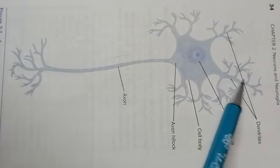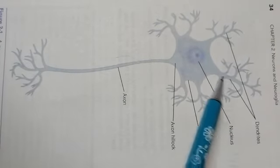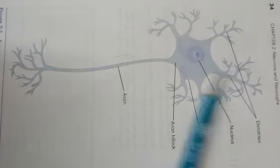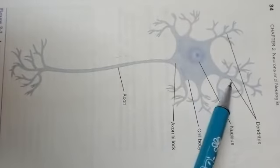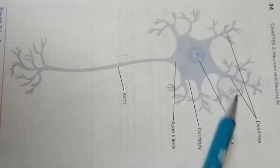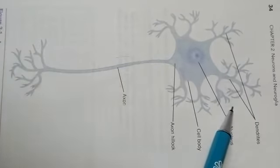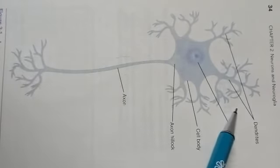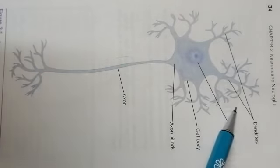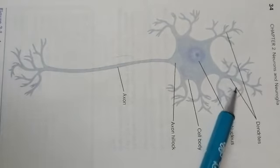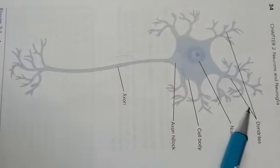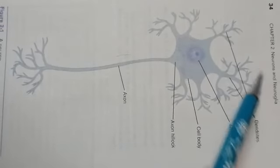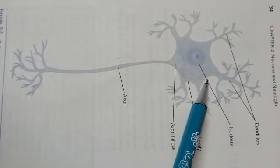Usually, you can say they are afferent in nature because they are carrying the impulses towards the cell body. They are carrying impulses towards the cell body of the neuron and these dendrites are large in number. They also increase the surface area for the reception of the impulse. These two functions: increasing the surface area and carrying impulses from the central nervous system to the cell body of the neuron.